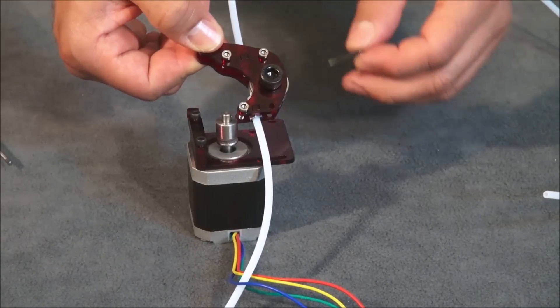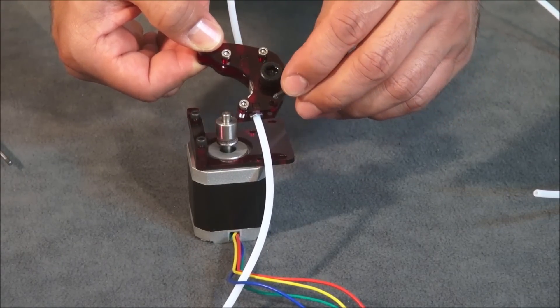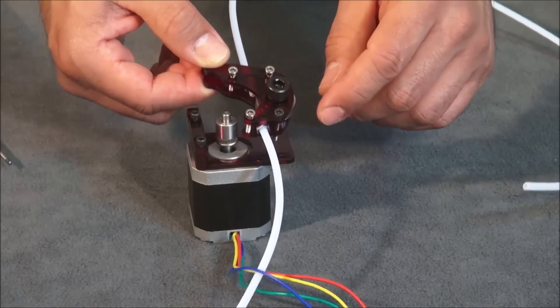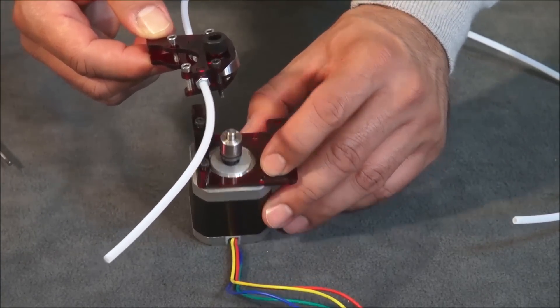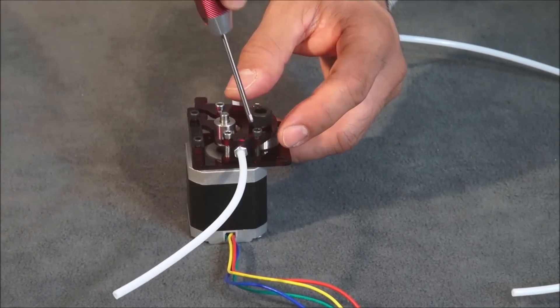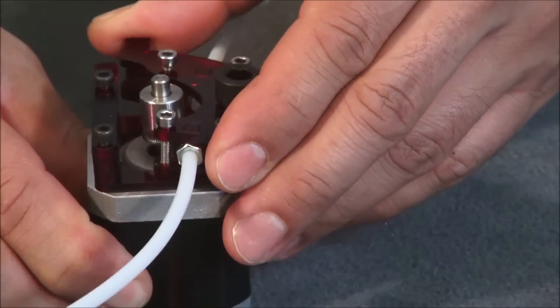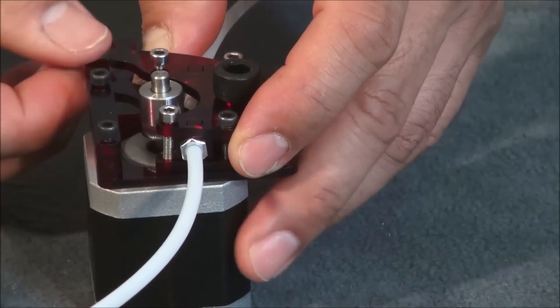For your next step, you're going to take your M3 by 20 millimeter bolt and it'll slide right through that opening. You'll line it up with that opening there, and this needs to thread all the way down into your motor. You don't want to completely tighten it because you want free movement on the top, but you want it nice and snug.